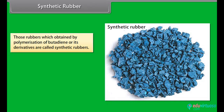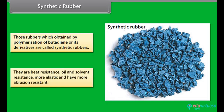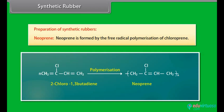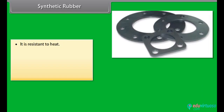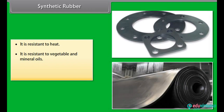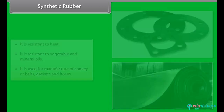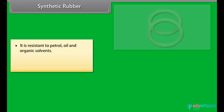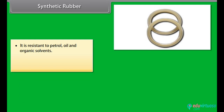Synthetic rubber: rubbers which are obtained by polymerization of butadiene or its derivatives are called synthetic rubbers. They are heat resistant, oil and solvent resistant, more elastic and have more abrasion resistance. Neoprene: neoprene is formed by the free radical polymerization of chloroprene. It is resistant to heat and to vegetable and mineral oils. It is used for the manufacture of conveyor belts, gaskets and hoses. Buna-N: it is obtained by co-polymerization of 1,3-butadiene and acrylonitrile. It is resistant to petrol, oil and organic solvents, and is used for making oil seals and tank linings.